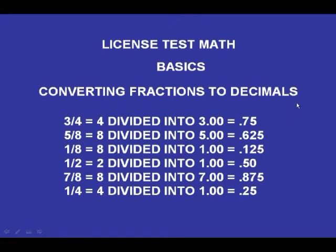Converting fractions to decimals: 3 quarters equals 4 divided into 3, or .75. 5 eighths equals 8 divided into 5, equals .625. 1 eighth equals 8 divided into 1, equals .125. 1 half equals 2 divided into 1, equals .50. 7 eighths equals 8 divided into 7, equals .875. And 1 quarter equals 4 divided into 1, equals .25.